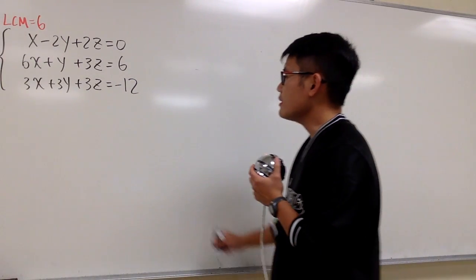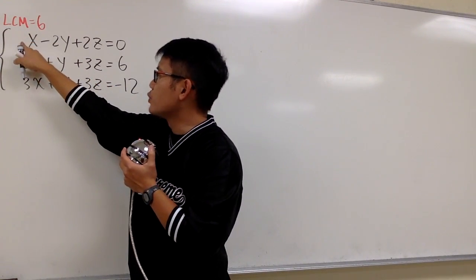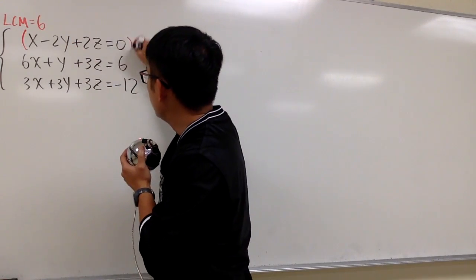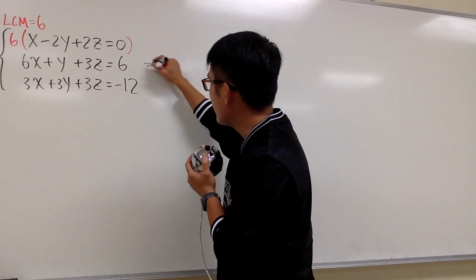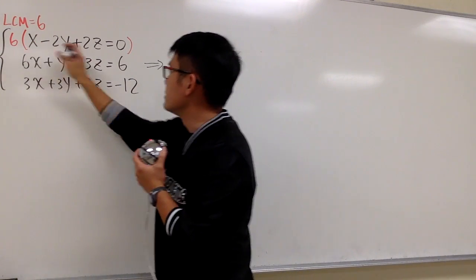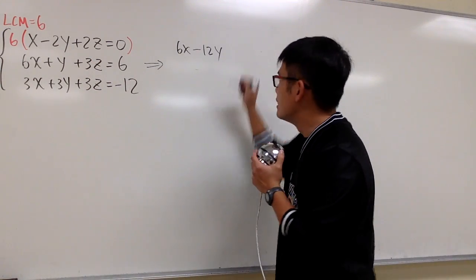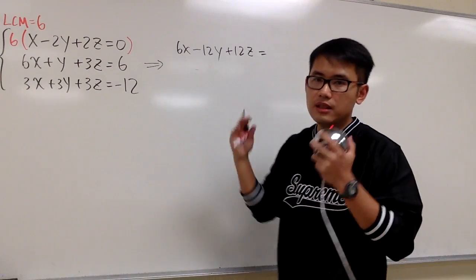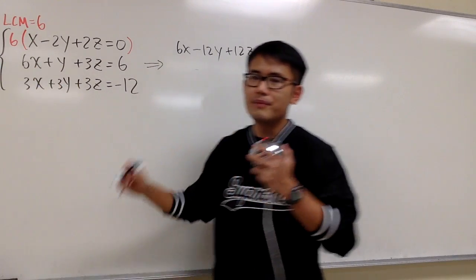For the first equation, we have a 1x, so we have to ask ourselves: 1 times what would give us 6? 1 times 6 would give us 6. Therefore, I'm going to take the first equation and multiply everything by 6, and put down the result to the right. So: 6 times x gives us 6x, 6 times negative 2y gives us minus 12y, 6 times plus 2z gives us plus 12z, and this equals 6 times 0, which is 0. Be sure you multiply everything in that equation by 6.